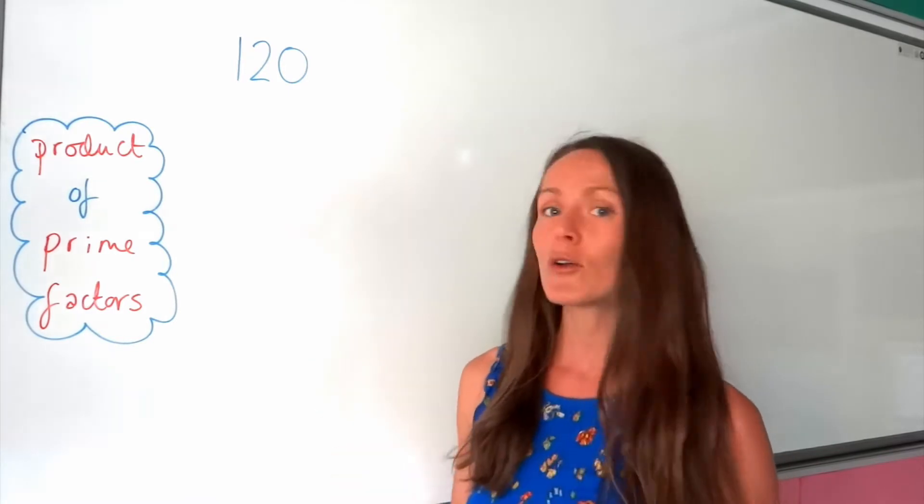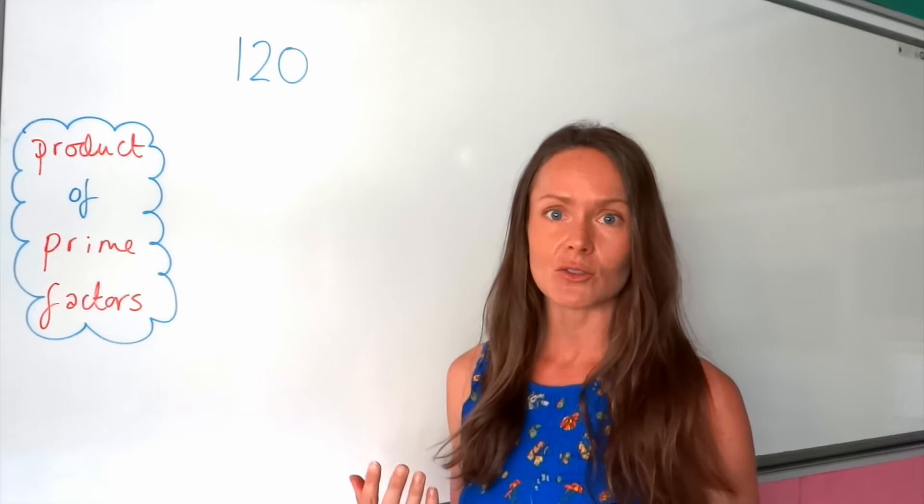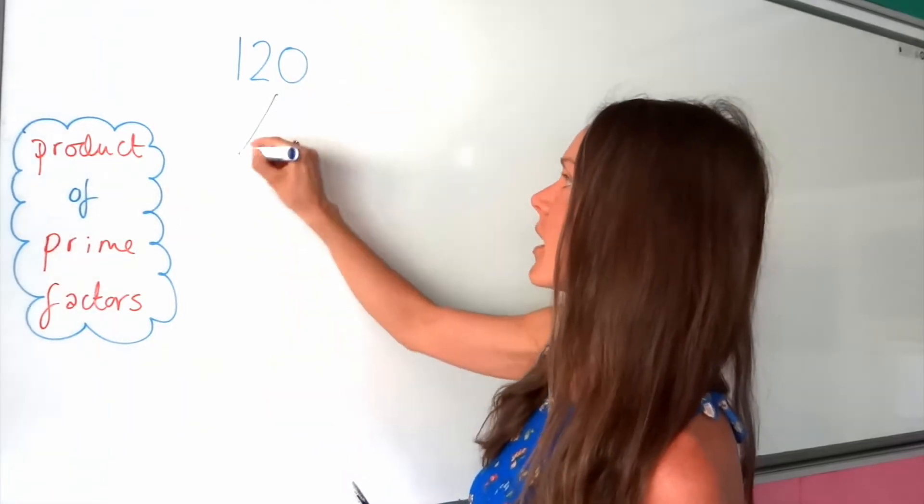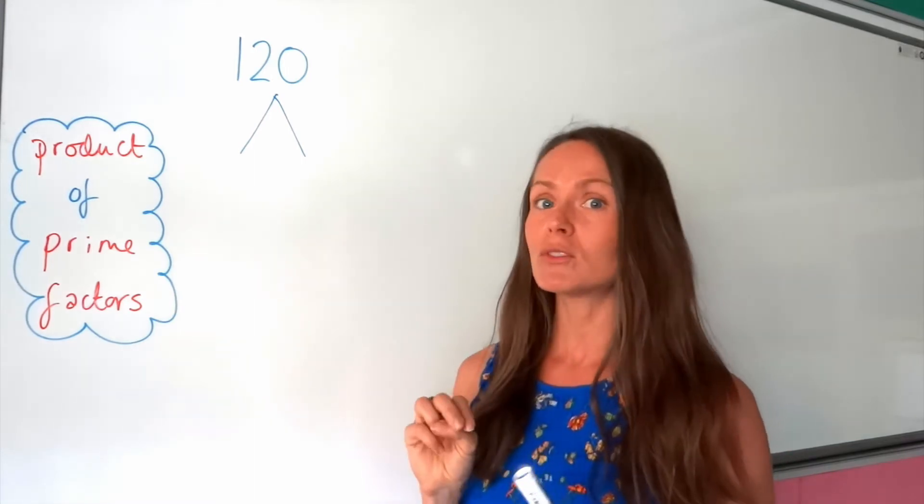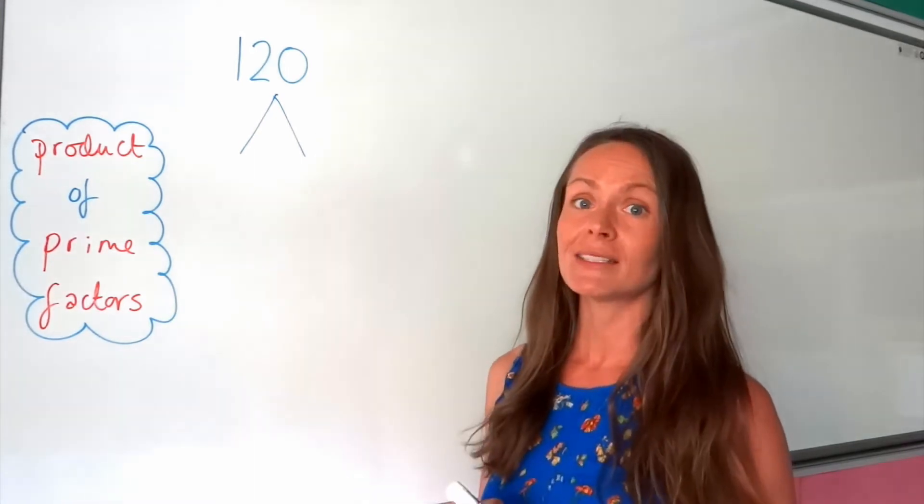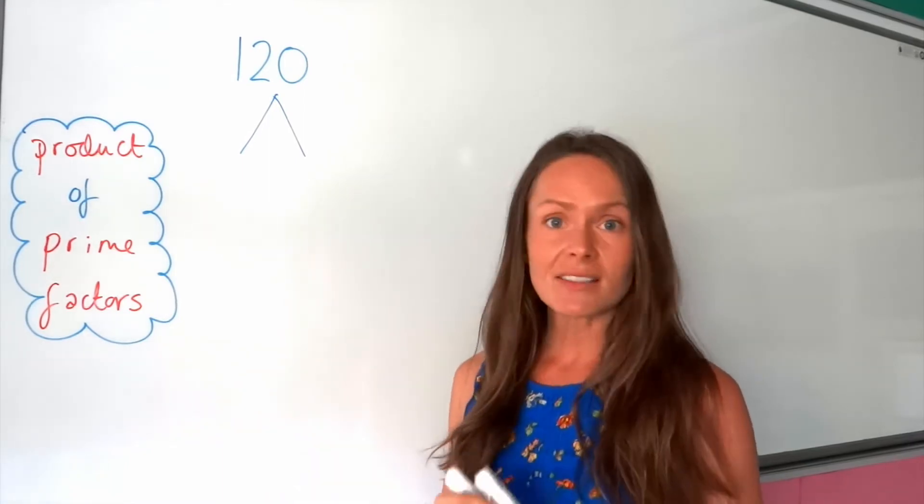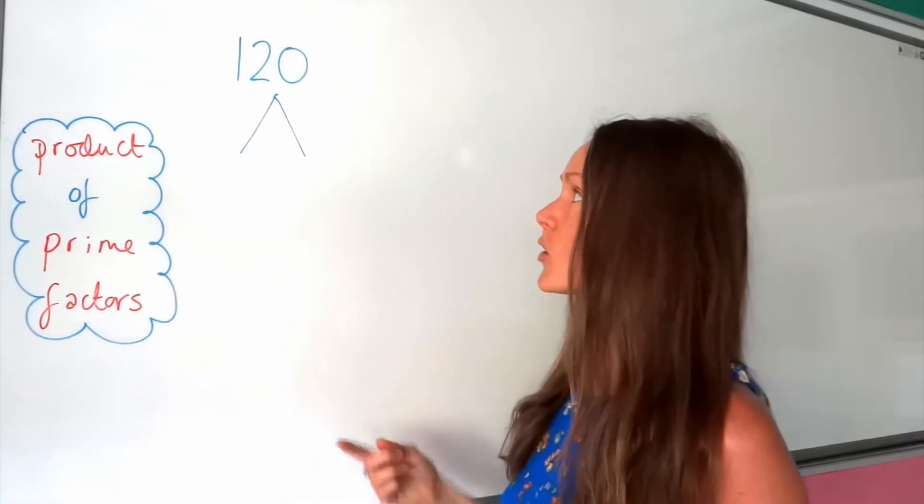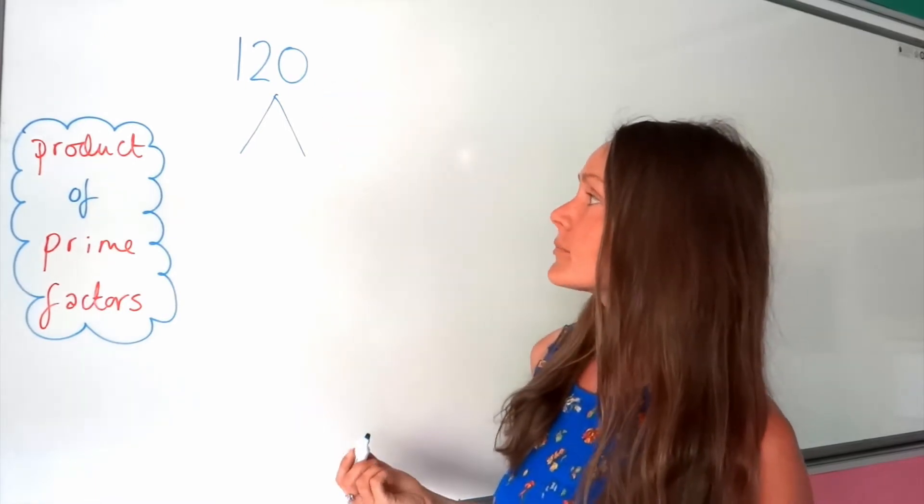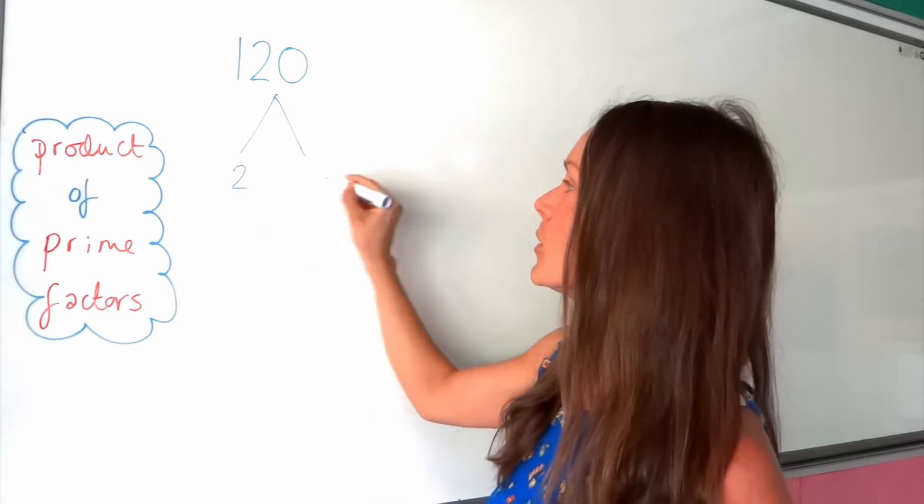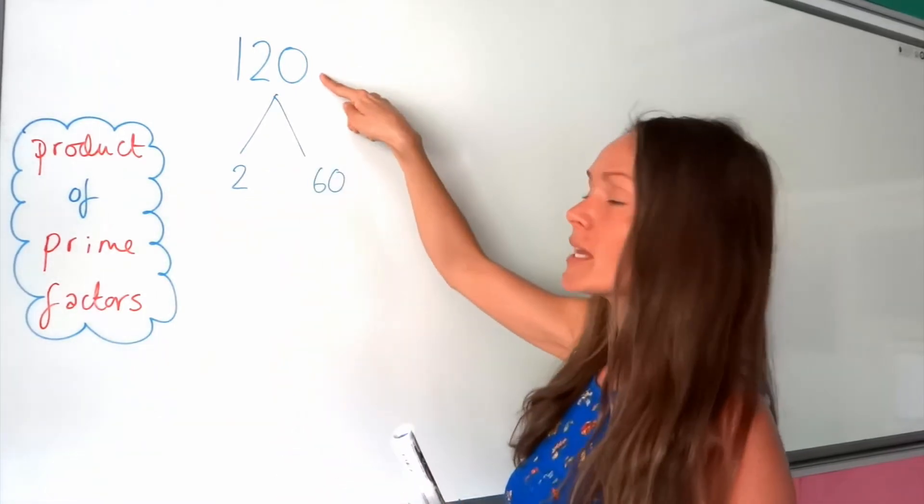So let's have a go at finding these factors. To do that, I'm going to draw something called a factor tree. So I'm going to have two lines that are like the branches of our tree, and I need to find two numbers that multiply to give 120. Now sometimes you're going to have lots of numbers to choose from. It doesn't matter which ones you choose, as long as you're not using this number here. So for the first one, I'm going to choose 2 and 60, because 2 multiplied by 60 gives me 120.